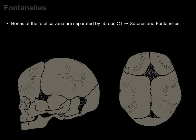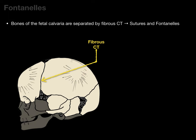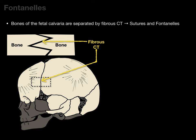The bones of the fetal calvaria are separated by fibrous connective tissue, and this connective tissue gives rise to sutures and fontanelles. Here we can see fibrous connective tissue separating these bones. If we blow up one area, you can see a bone on one side and a bone on the other, filled between with fibrous connective tissue. This makes a fibrous joint, which is what forms our sutures.